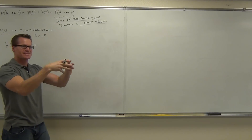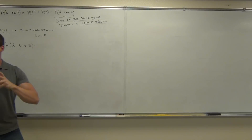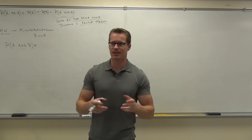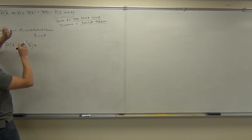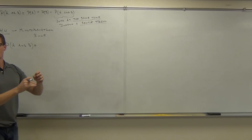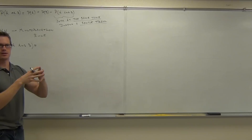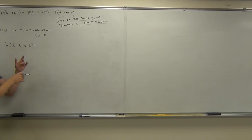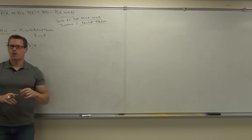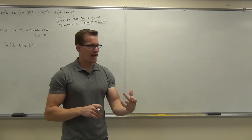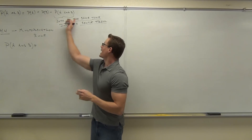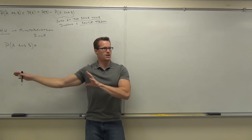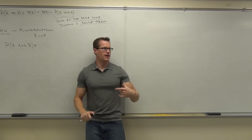We have this 'and' which means at the same time in one trial. For the multiplication rule, this 'and' means something different. In the addition rule, probability of A or B means A happening, B happening, or both at the same time. With the multiplication rule, probability of A and B means I want you to find the probability of event A happening and then event B happening right after it — two different things.